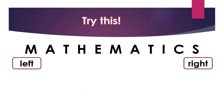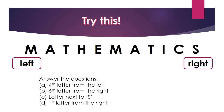Now I want you to try these questions. Question A: find the fourth letter from the left. Question B: find the sixth letter from the right. Question C: find the letter next to S. Question D: find the first letter from the right. Pause the video and play back if you are ready with your answer. Welcome back! Here are the answers: A — the answer is H; B — the answer is M; C — the answer is C; D — the answer is S. Well done!